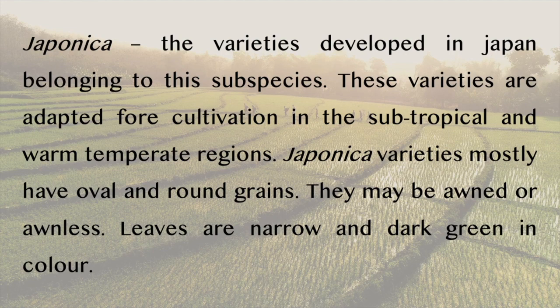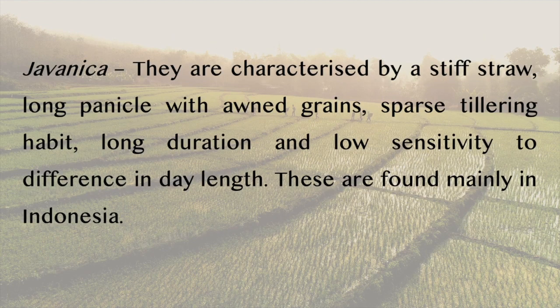Japonica varieties developed in Japan belong to this subspecies. These varieties are adapted for cultivation in subtropical and warm temperate regions. Japonica varieties mostly have oval and round grains. They may be awned or awnless. The leaves are narrow and dark green in color. Javanica varieties are characterized by a stiff straw, long panicle with awned grains, sparse tillering habit, long duration and low sensitivity to differences in day length. They are found mainly in Indonesia.